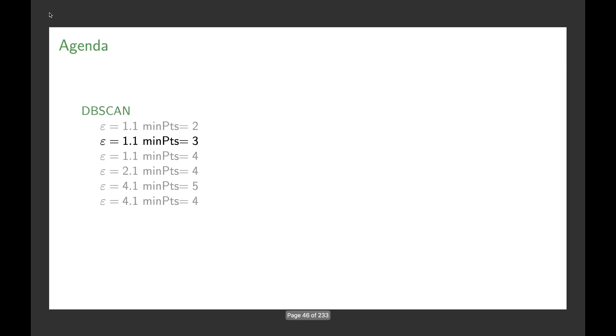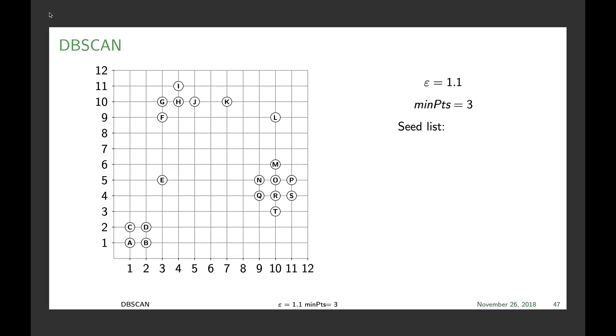We then continue with epsilon 1.1 and minPts 3. That makes A still a core point, C still a core point, and B still a core point, and also of course D.